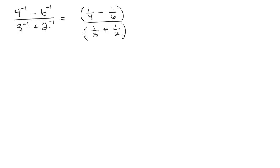I usually pick the least common multiple, but if you pick a bigger one, as long as you reduce at the end, you'll be okay. The least common multiple of two, three, four, and six is twelve — that's the smallest number all of those divide into evenly. So I'm going to multiply the whole numerator by twelve and the whole denominator by twelve.